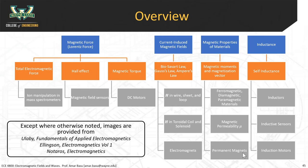Today we're going to spend roughly 30 minutes talking about some of the remaining concepts in magnetostatics. We've talked about the Lorentz force, the total electromagnetic force, Hall effect sensors, and magnetic torque. This material will definitely be on the final exam. You can also expect that current-induced magnetic fields will be on the exam — you have several homework problems on that. Today we're going to talk about applications of these magnetic fields: electromagnets and some concepts of inductance, including the basic inductance of a solenoid coil and some magnetic properties of materials.